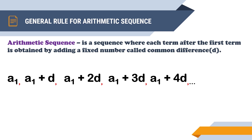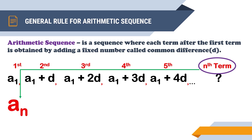The fifth term will be a₁ + 4d, and so on. In our sequence we have the first, second, third, fourth, and fifth terms. What we want is the nth term, which can be any term. From our previous lesson, the nth term is denoted a_n, and that is also the notation used in our general rule. We know a_n equals a₁ plus some number of common differences added to a₁.